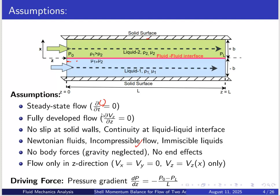No body force — gravity is neglected because the channel is horizontal, so no gravity force. No end effects; flow is only in the z direction because Vx and Vy are both zero. Therefore Vz is a function of x only, because as you move from one plate to the other the velocity changes. The driving force is the pressure gradient: dP/dz equals minus (P0 minus PL) by L.